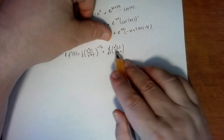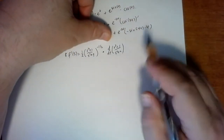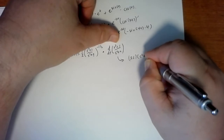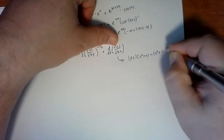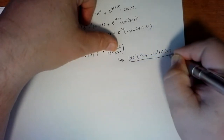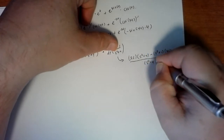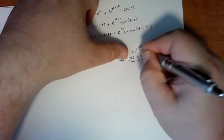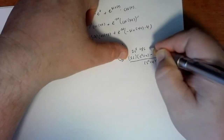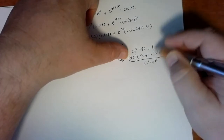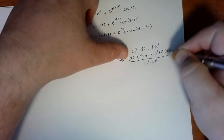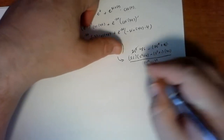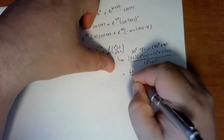To differentiate this we need the quotient rule: the derivative of the top times the bottom, minus the top times the derivative of the bottom, all divided by the bottom squared. Simplifying, we get 2s cubed plus 8s minus 2s cubed plus 2s — the 2s cubed terms cancel, 8 minus 2 gives 6s, so we end up with 6s over (s squared plus 4) cubed.